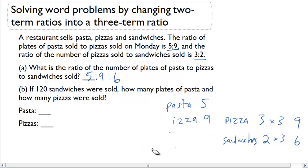Alright, so if I have this ratio 5:9:6, I can now find an equivalent ratio that has something to something to something.